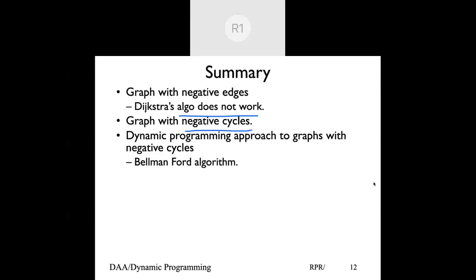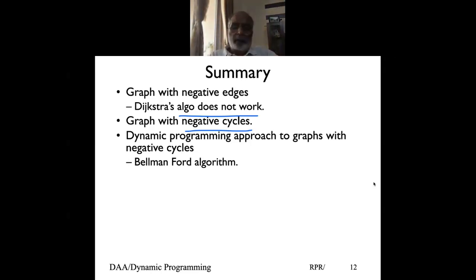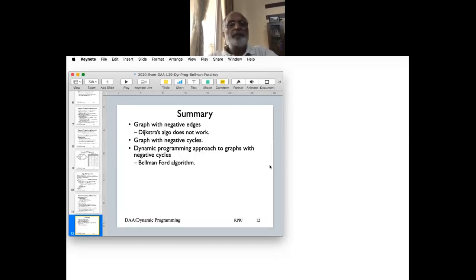Bellman-Ford does not work for graphs with negative cycles — it can work only if there are no negative cycles. Any questions on Bellman-Ford? Otherwise, in the next five minutes I'll quickly run through optimal binary search and make sure we understand its time complexity.